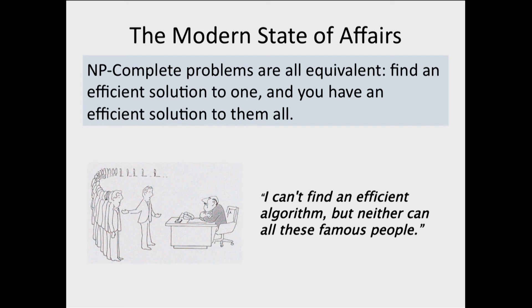And as a result, our failure to solve the Hamiltonian path problem becomes a little bit less upsetting, because we know that we failed to solve it, but we also know that thousands of computer scientists also failed to solve it.